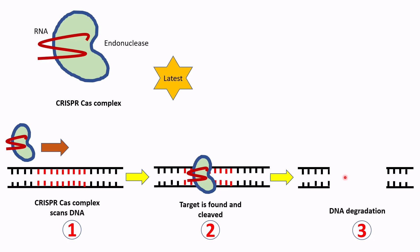In TALEN and ZFN, protein-DNA interaction occurs. Whereas in CRISPR-Cas, DNA-RNA base pairing occurs. The pros are it is a very fast and cheap technique. It can be designed easily. Its concern is that it also has a number of off-target mutations.